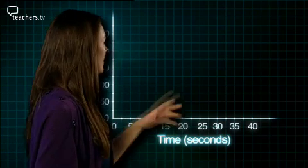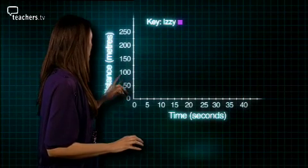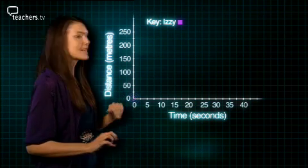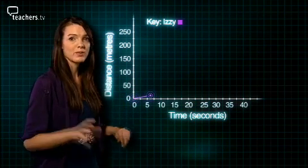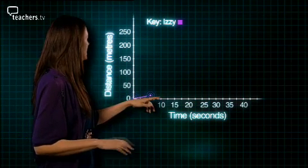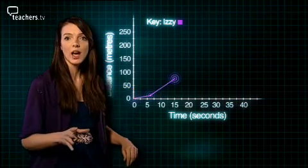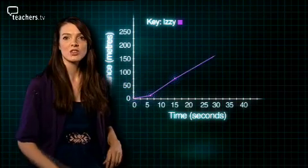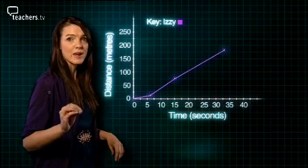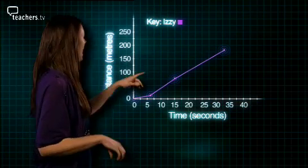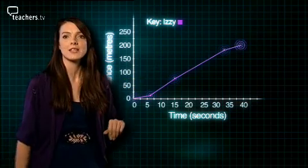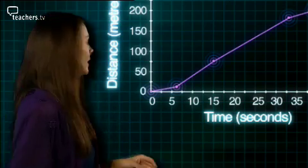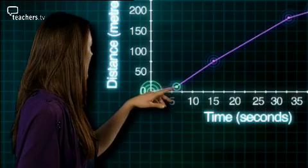Let's have Izzy first. The beginning of the race starts at (0,0). After 6 seconds she has travelled 12 metres, after 15 seconds 75 metres, after 33 seconds 183 metres, and she's run her 200 metres in 39 seconds. That's pretty good. Let's see how Dave's done and plot his graph on the same axis.